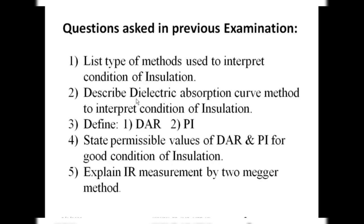The second frequently asked question is: describe a specific method — such as the dielectric absorption curve method — to interpret the condition of insulation. For every method, you must draw the relevant graph or define the ratio, supported by a relevant diagram of IR measurement using the megger on the given electrical equipment. Your description must include how the interpretation of insulation condition is obtained from the given set of readings, graph, or value of DAR or PI.